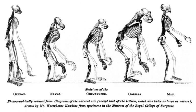'But if man be separated by no greater structural barrier from the brutes than they are from each other, then it seems to follow that there would be no rational ground for doubting that man might have originated by the gradual modification of a man-like ape. At the present moment there is but one hypothesis which has any scientific existence — that propounded by Mr. Darwin,' p125.